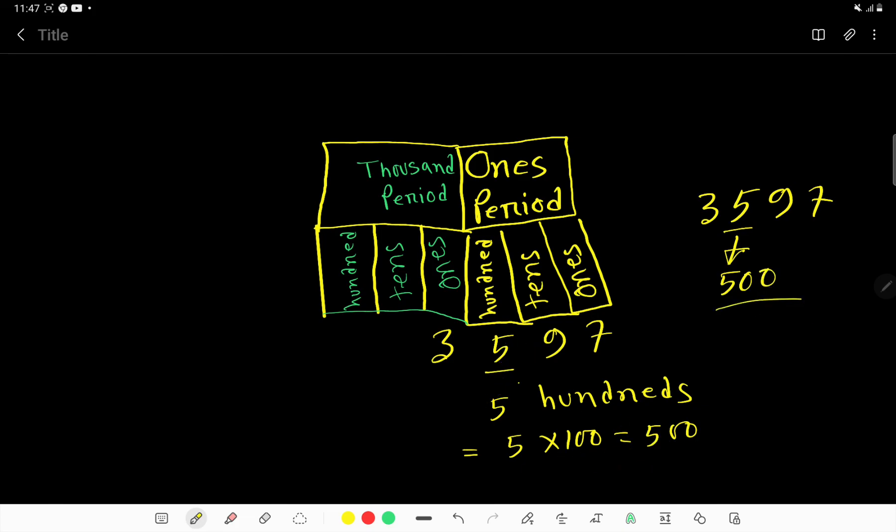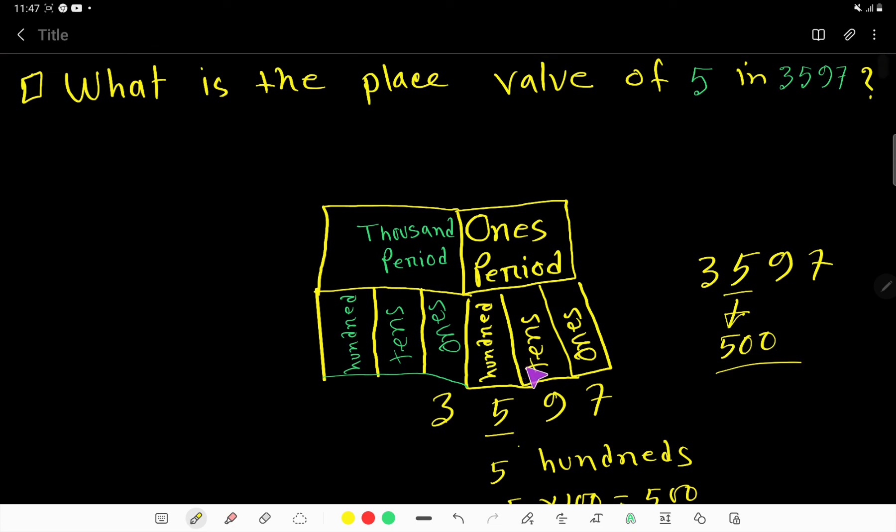Here also we are getting 500. I hope you have understood the two ways of finding out the place value for five.